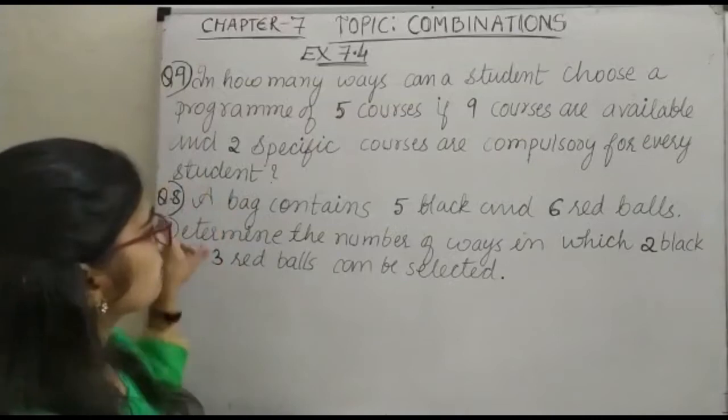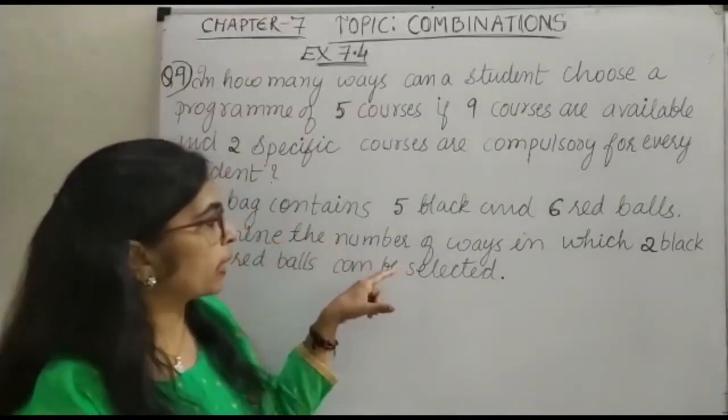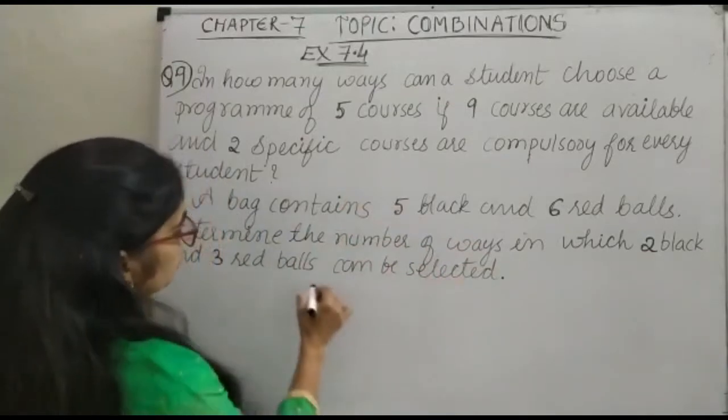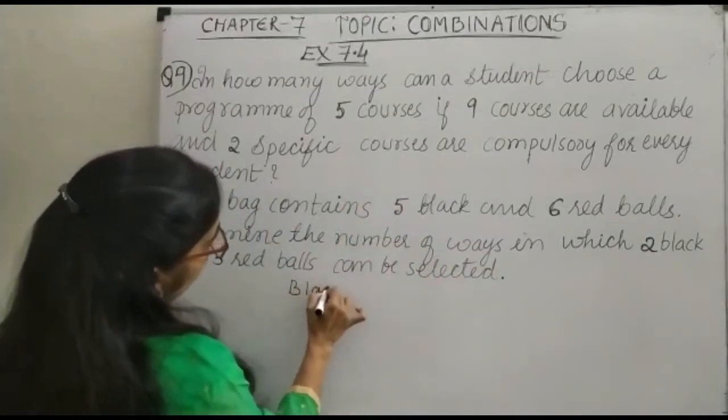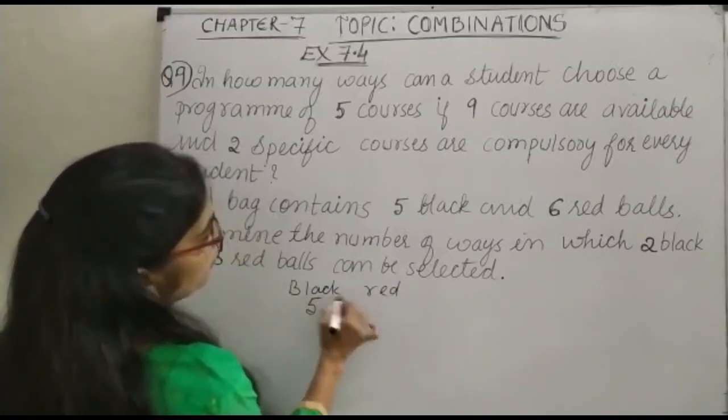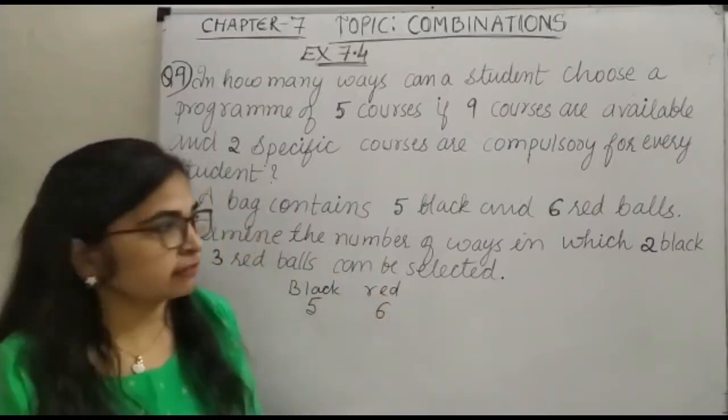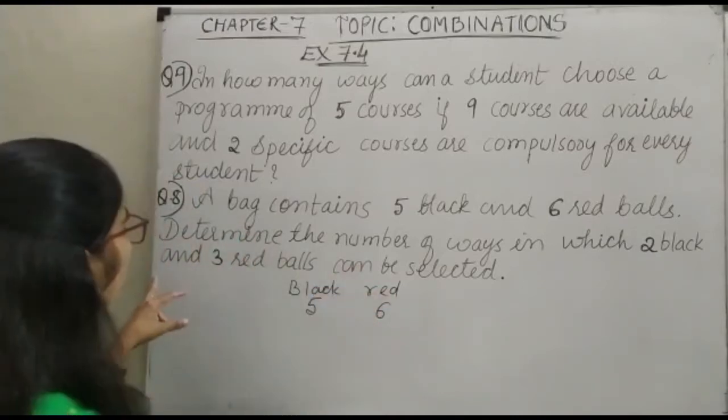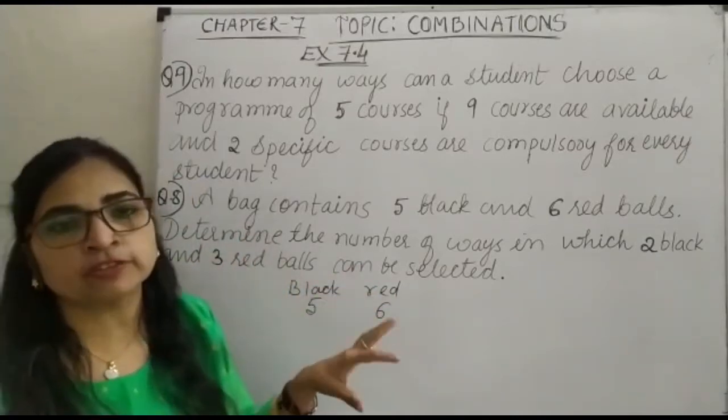Your question number 8 says a bag contains 5 black balls and 6 red balls. So we can see here black ball and red. Black you have 5 and red you have how many? 6. Determine the number of ways in which 2 black and 3 red balls can be selected.